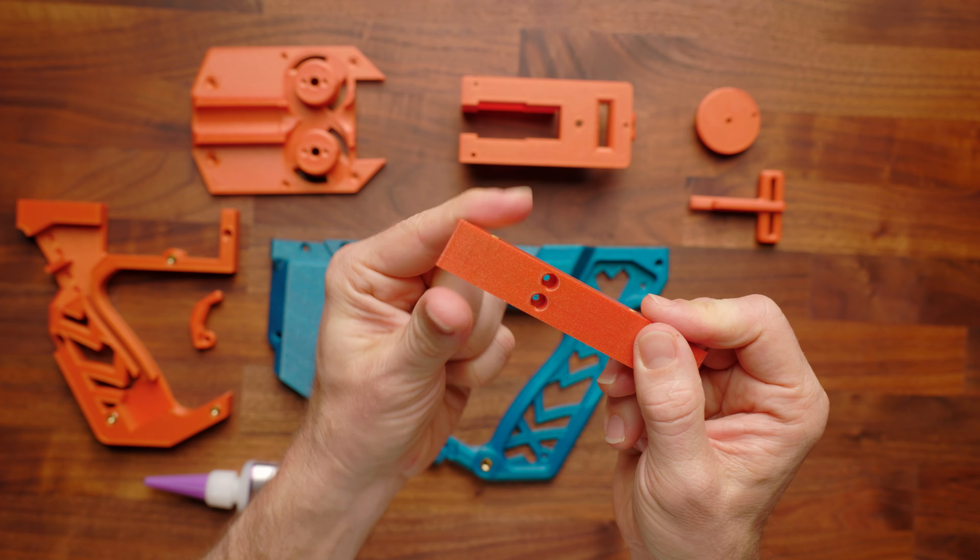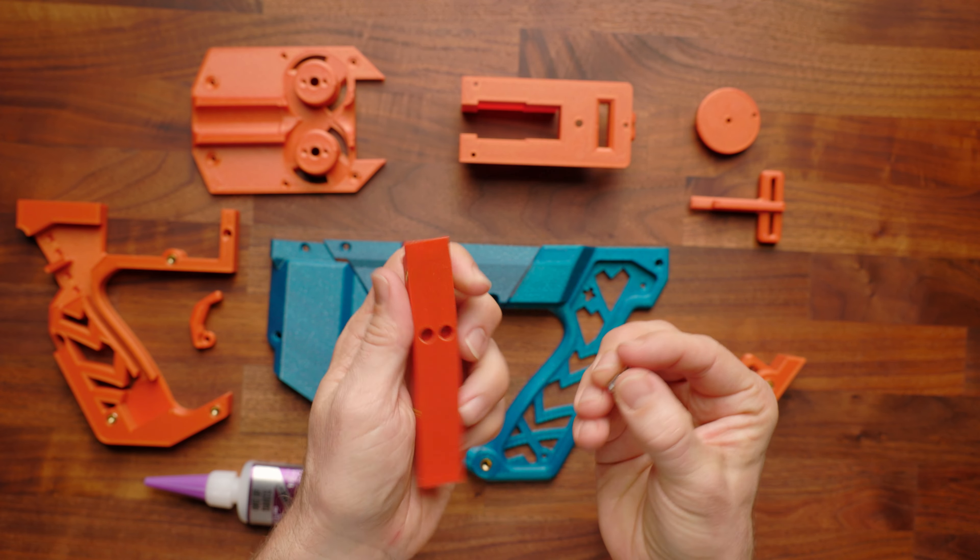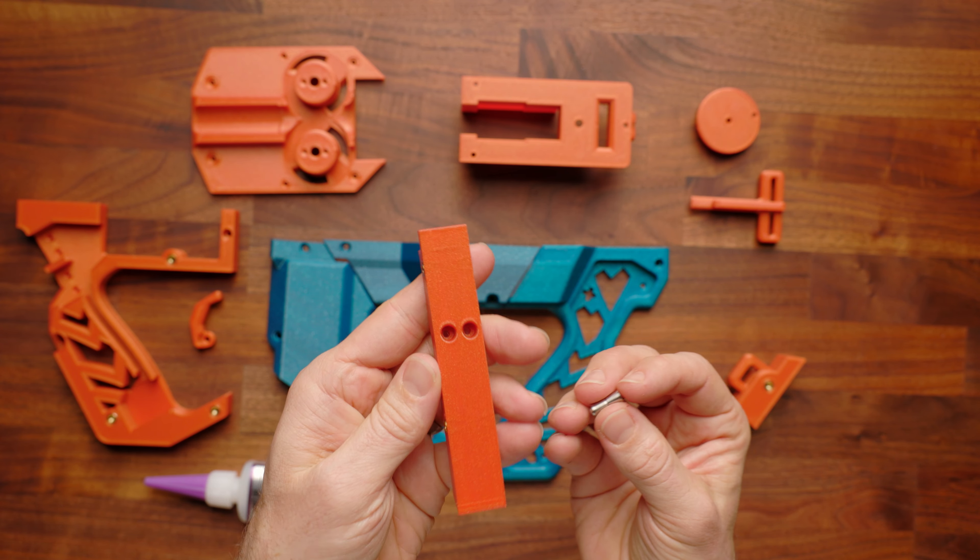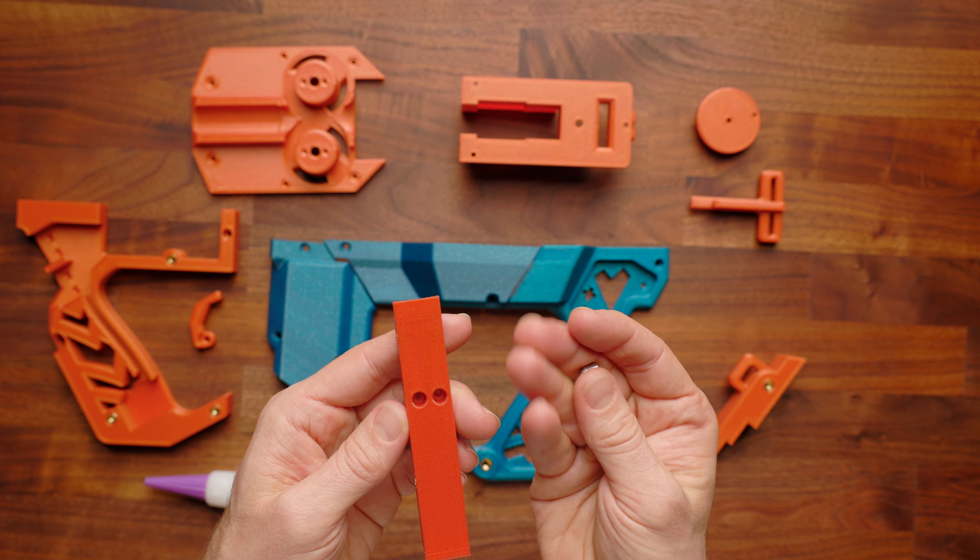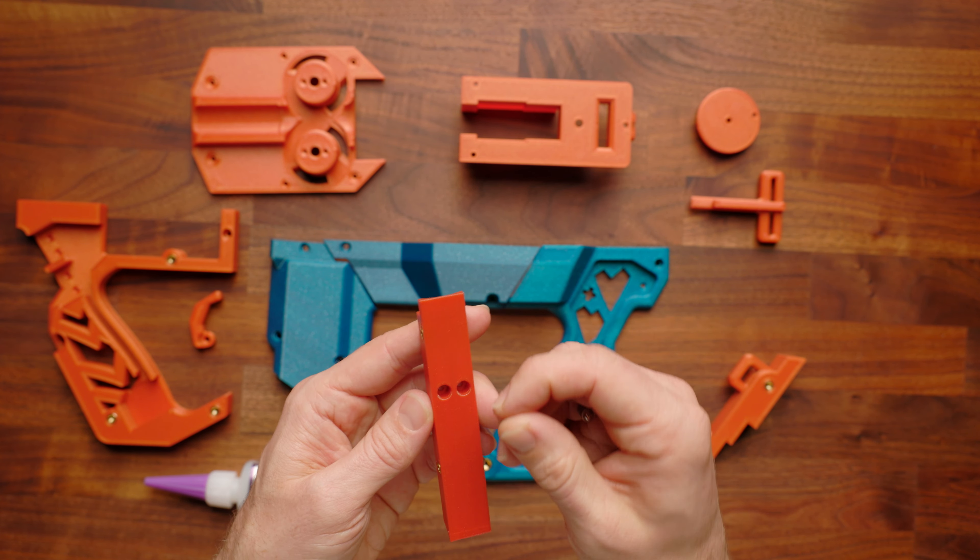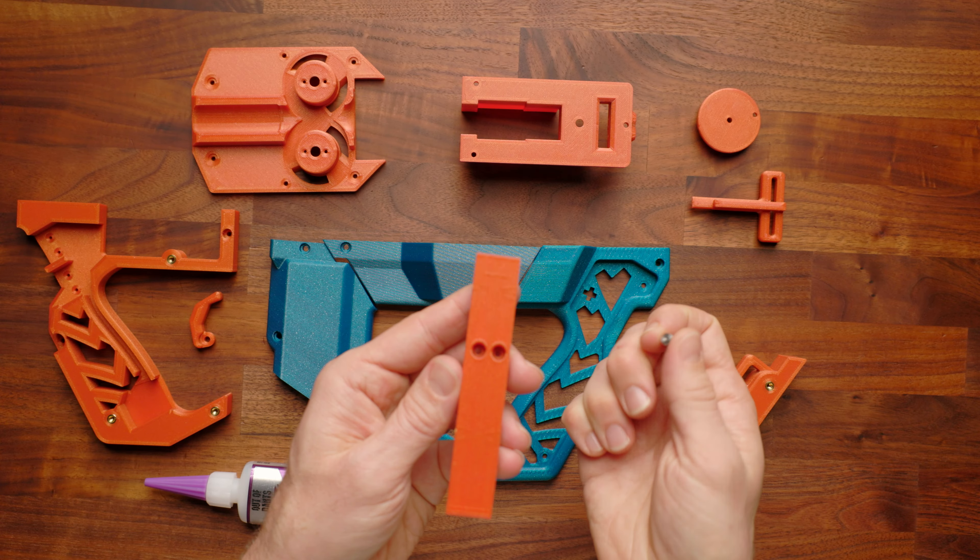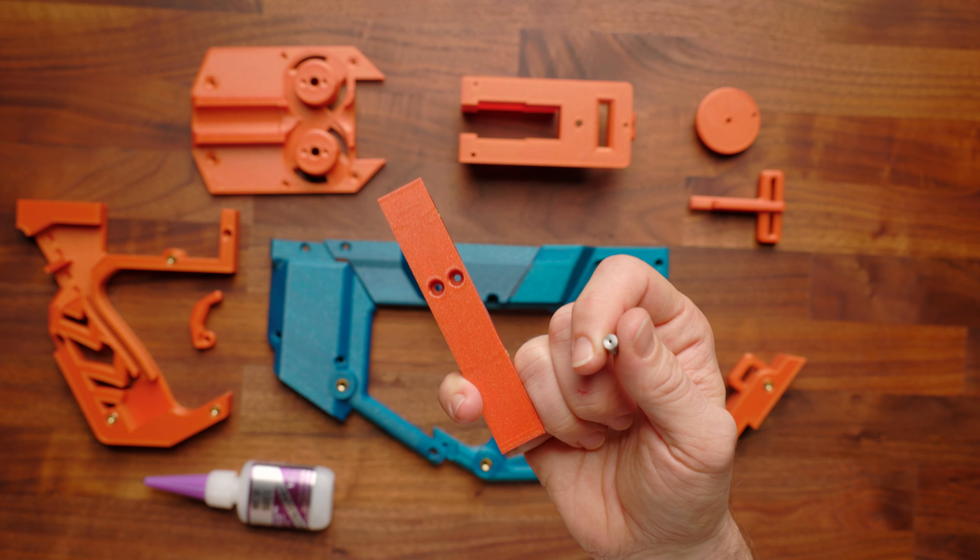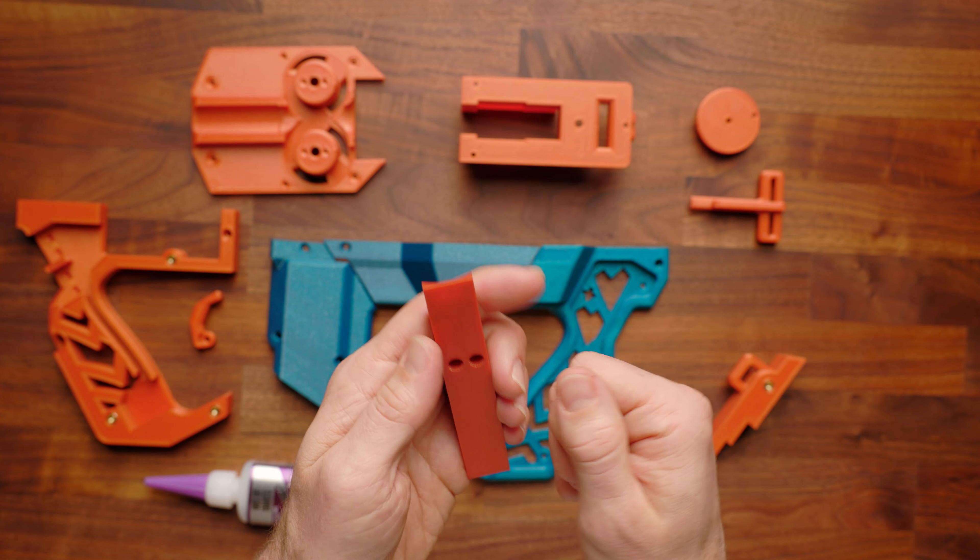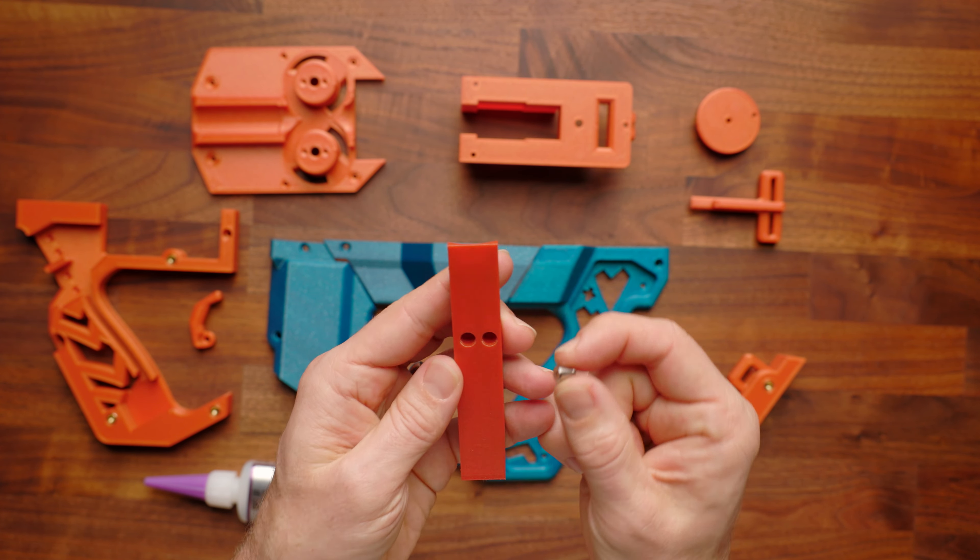You're going to want to take this spine part here, and your first decision you have to make is how strong you want your detents to be on your mag release. So, there are two detents. These are ball-bearing stainless detents, and they get glued inside here. You put one in. That's fine. That's a lighter hold. Put two in if you want to use a tri-mag or something like that, or you'd like a firmer grip on the actual magazine itself.